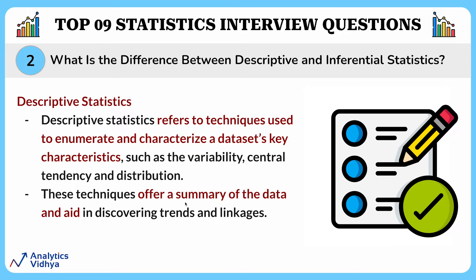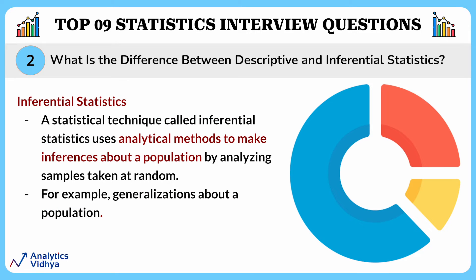For example, if you have a dataset of exam scores for a class, descriptive statistics would summarize the average score, the spread of scores, and the most common score achieved. Inferential statistics, on the other hand, uses analytical methods to make inferences about a population by analyzing samples taken at random. For example, if you want to know whether a new teaching method improves test scores for all students, you might conduct an experiment with a sample of students and use inferential statistics to generalize the findings to the entire population.